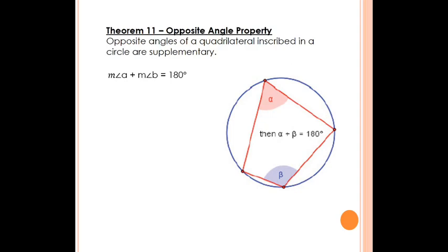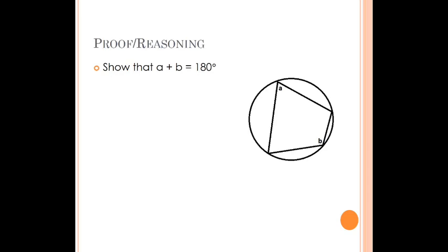Next is Theorem 11, the opposite angle property: if a quadrilateral is inscribed in a circle, opposite angles are supplementary. I've drawn an inscribed quadrilateral and I'm introducing two variables. I'll label one arc as X and the remaining arc as Y. Since X and Y together make the entire circle, we know that X plus Y equals 360 degrees.